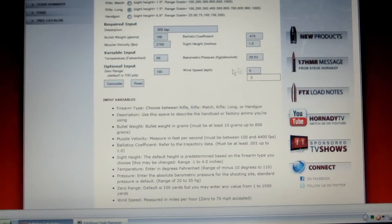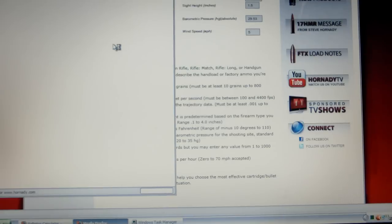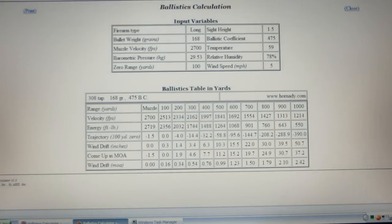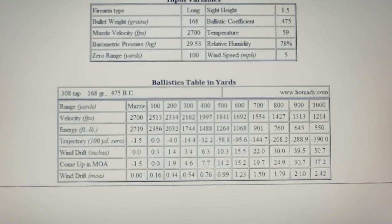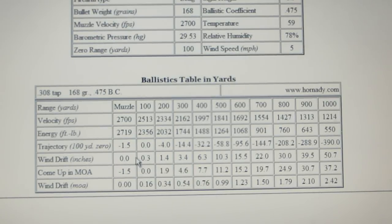I'm going to put in a five mile an hour crosswind and calculate. Here's the chart — goes all the way out to a thousand yards. It tells you your velocity in feet per second, your energy in hundred-yard increments out to a thousand, your trajectory, wind drift, come-ups in minutes of angle, and wind drift in minutes of angle for a five mile an hour crosswind at these different ranges.